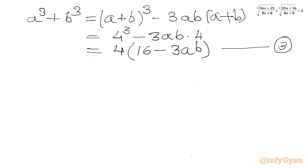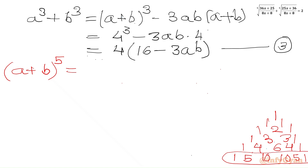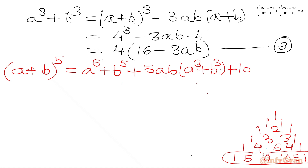Now we will use binomial expansion and Pascal's triangle for (A plus B) to the power 5. Writing out the expansion: A^5 plus 5AB(A cubed plus B cubed) plus 10 A squared B squared times (A plus B), with the last coefficient being B^5. So we have A^5 plus B^5 plus 5AB in the bracket (A cubed plus B cubed) plus 10 A squared B squared times (A plus B).